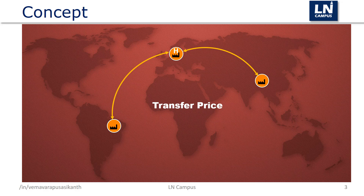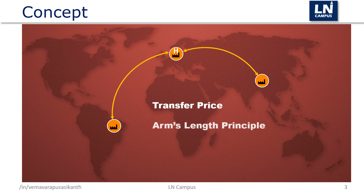The answer is: the multinational company sets the price for each transaction, which is called the transfer price. Based on transfer pricing rules, when two parties exchange goods, services, intangible properties, or any financial arrangements, the price should be the same as if the two companies were independent of each other. This is also known as the arm's length principle.